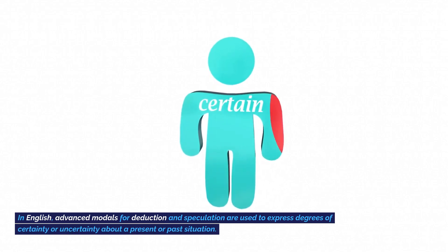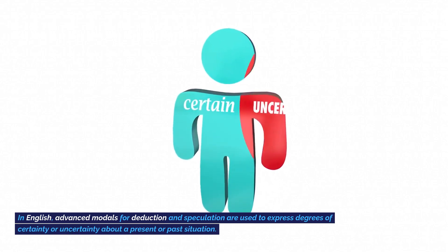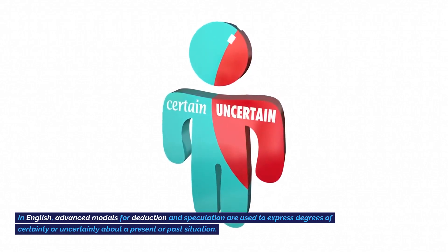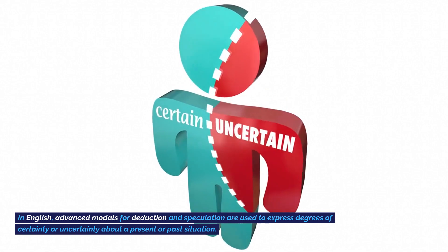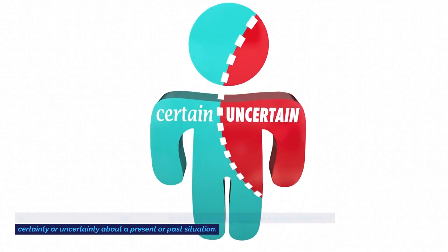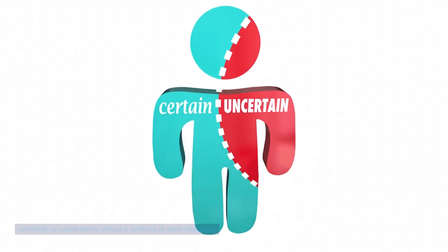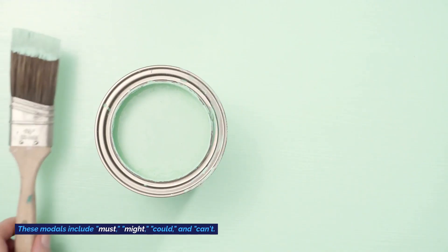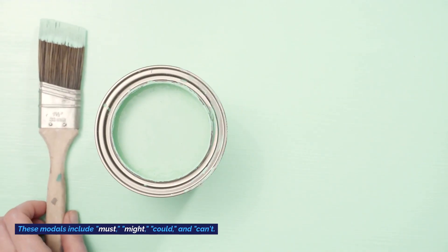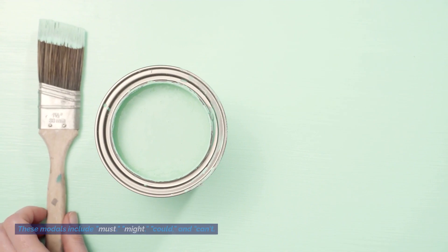In English, advanced modals for deduction and speculation are used to express degrees of certainty or uncertainty about a present or past situation. These modals include must, might, could, and can't. Here's a detailed explanation with examples.